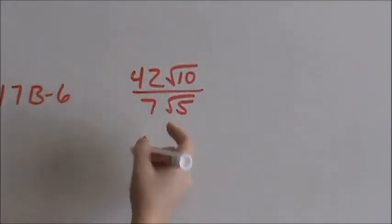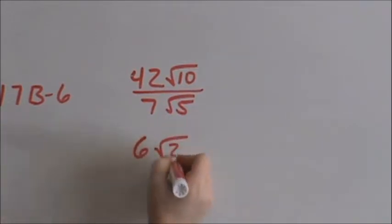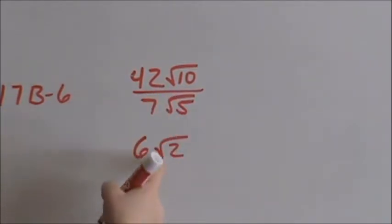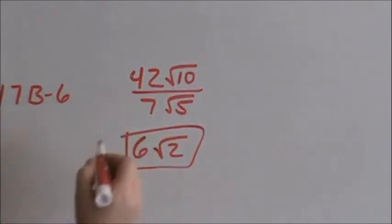Square root of 10 divided by square root of 5 is square root of 2. 10 divided by 5 is 2. But make sure you have your radical. And that is the final answer for that.